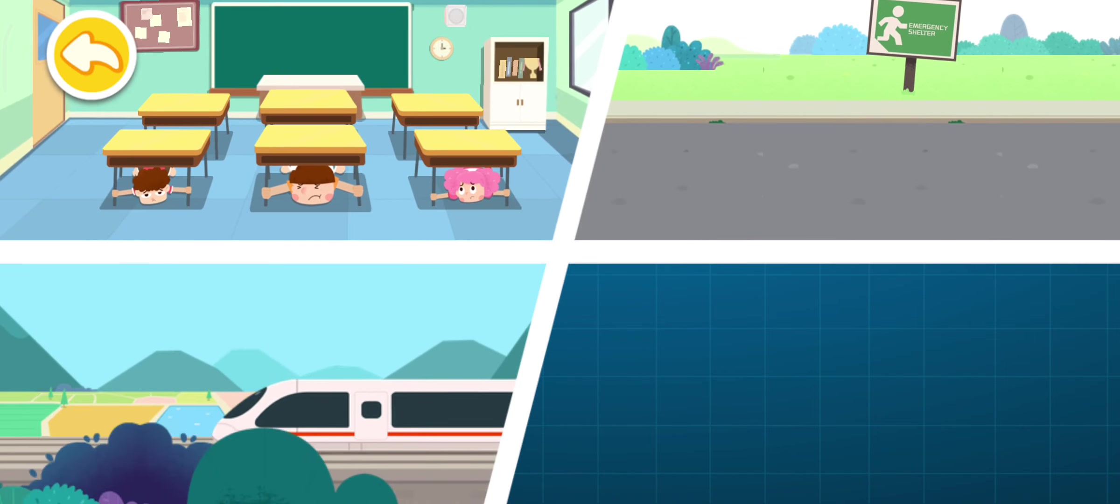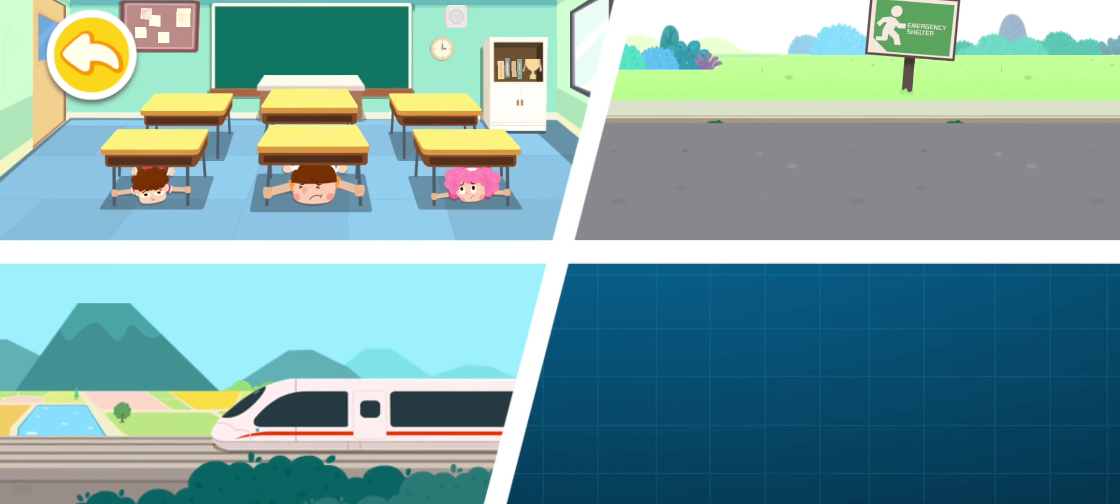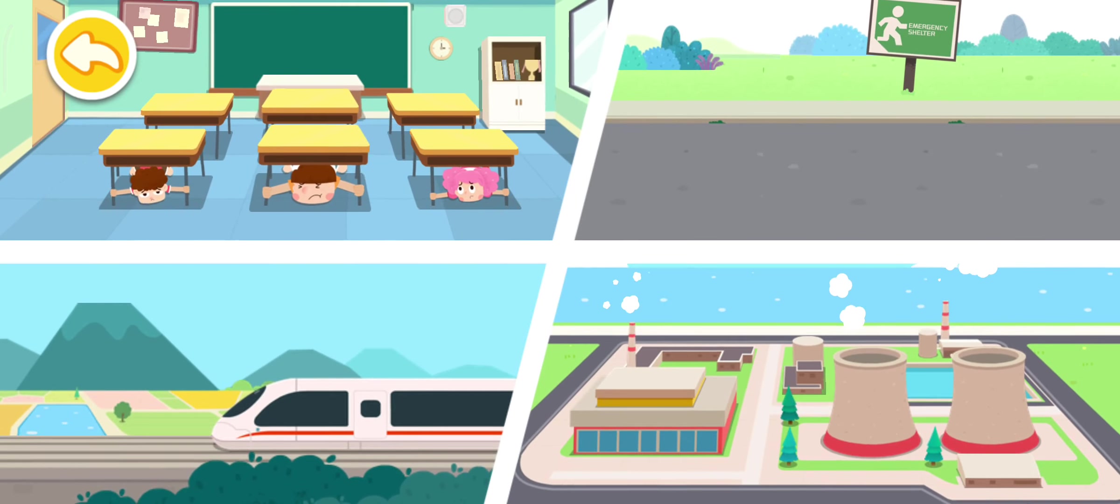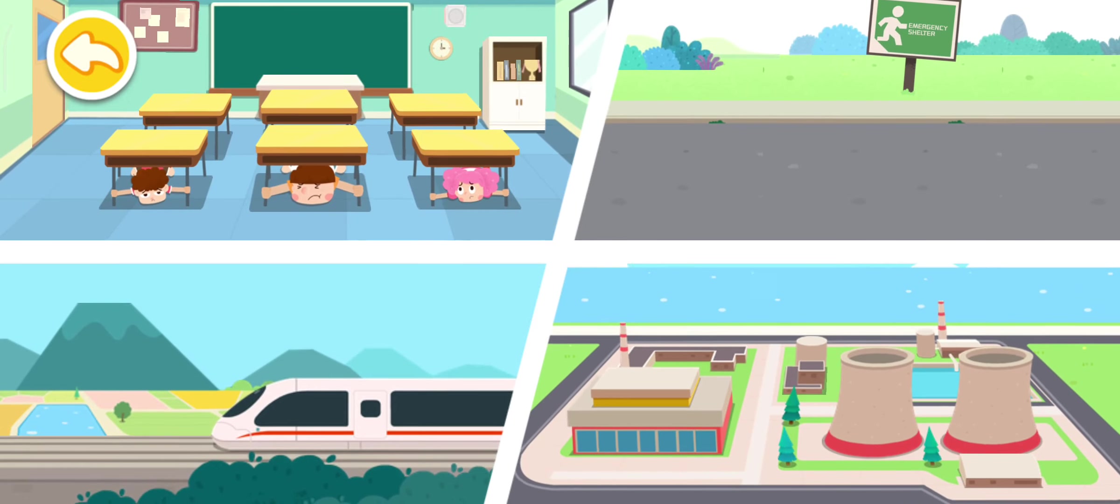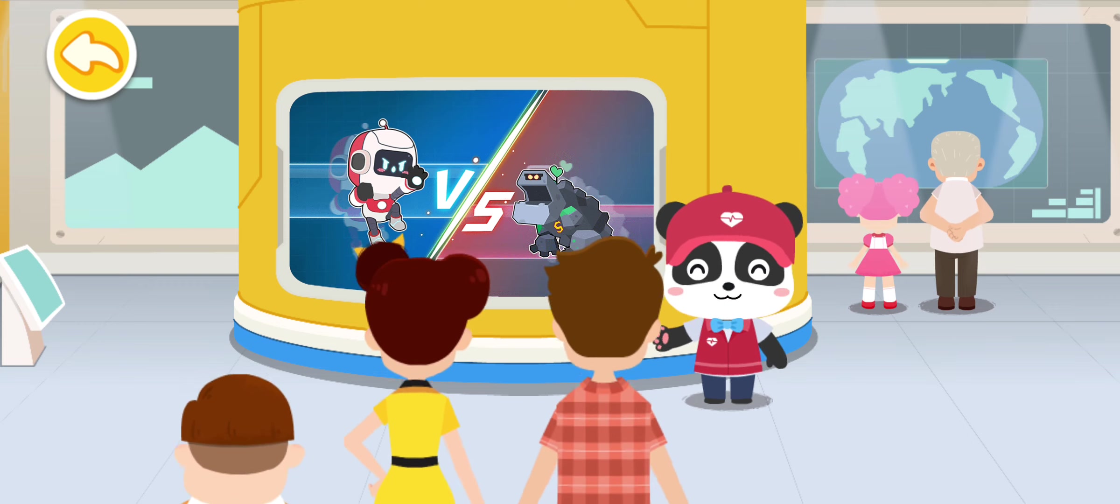Once receiving an earthquake warning message, the bullet train will make an emergency break immediately in order to stay safe. Nuclear power plants will shut down immediately as well. Next, let's reinforce your knowledge on earthquake warnings.